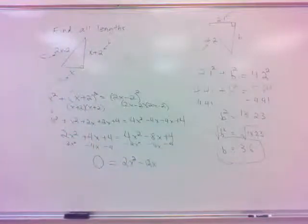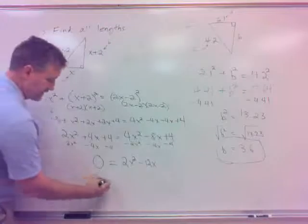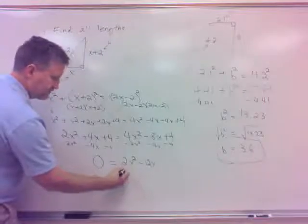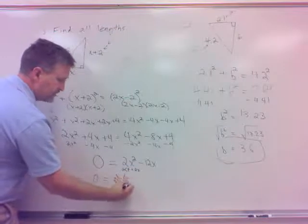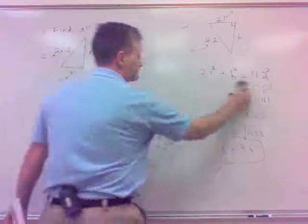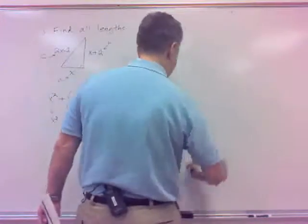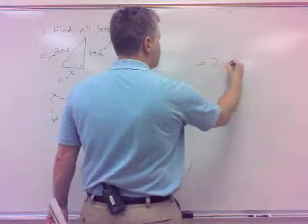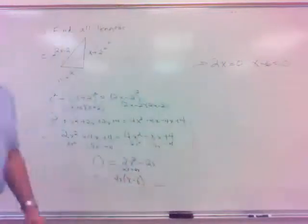Okay, then I'll look to factor. Can I factor that? I think so. It's got a GCF of 2X, so pull out a 2X, which will make it an X minus 6 with that. And that will mean either 2X equals 0 or X minus 6 equals 0, wouldn't it?